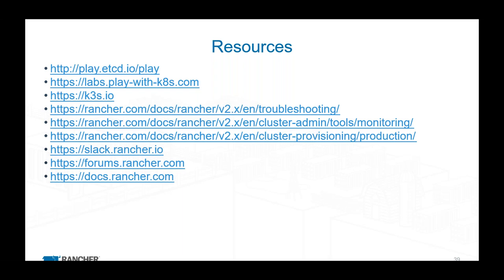A question from Nabil: how do you troubleshoot IPVS/networking plague problems? Plagues always point to a networking issue — that's something with canal, flannel, or whatever network provider you're using. What it's saying is: I can't get a MAC address or IP address, and the one that hands those out is the network provider. Dig into your canal, flannel, or Weave logs — usually as soon as you look at those logs, it will tell you pretty quickly what's going on.